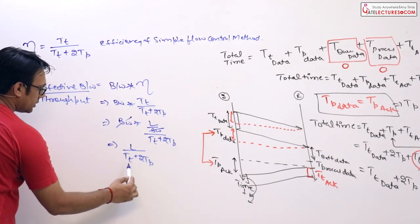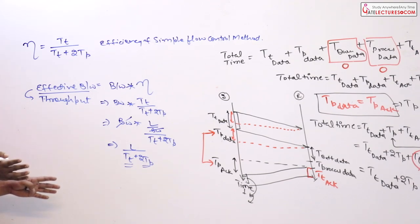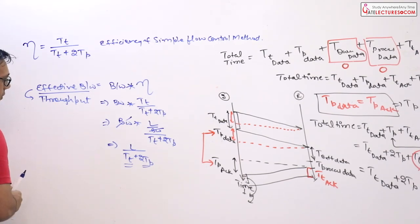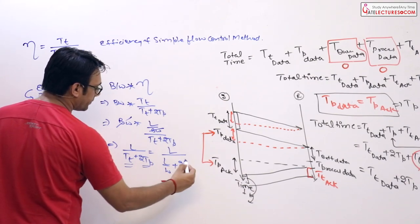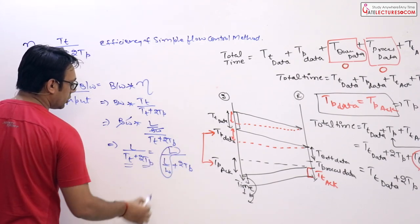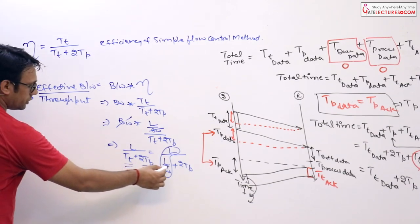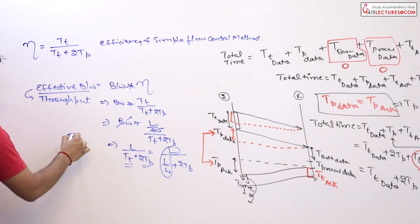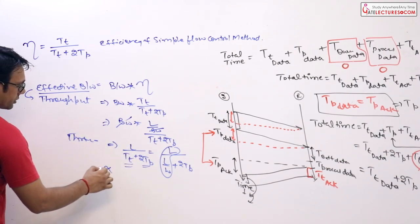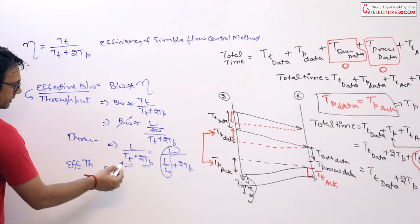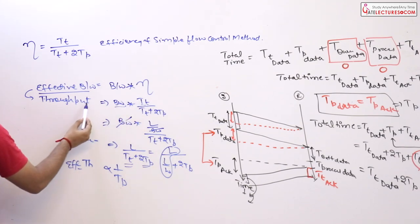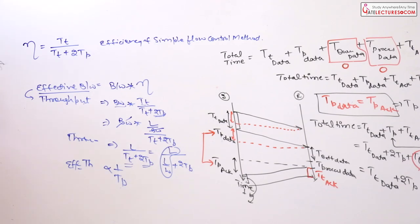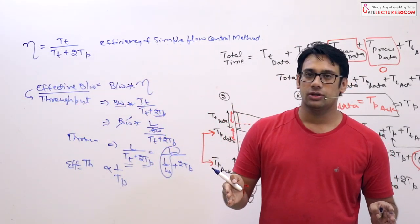You can expand these formulas further: tt can be written as length of data packet divided by bandwidth, giving length of data packet divided by (bandwidth + 2·tp). From this you can see that throughput or effective bandwidth is inversely proportional to propagation delay (tp), because 2·tp appears in the denominator.